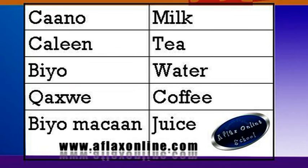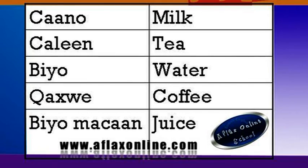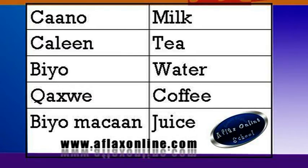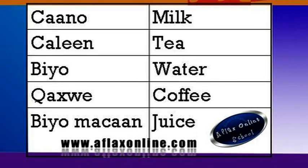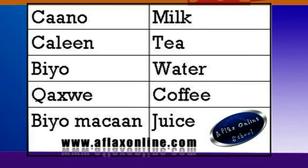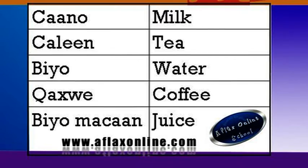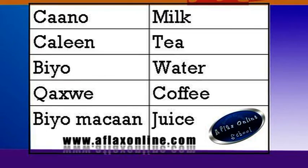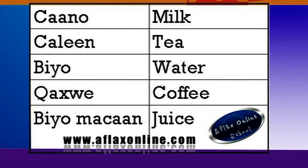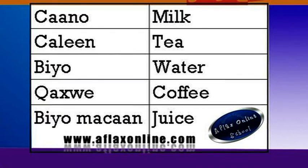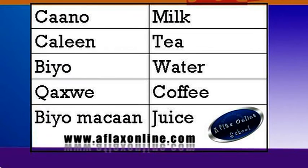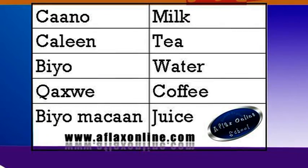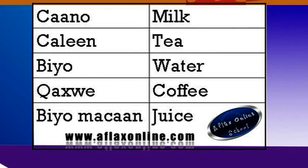If you go to a restaurant you can ask: 'si i cup shaah' — give me one cup of tea with milk. The next very important word is 'biyo' — water. In any case if you end up somewhere you can ask for water: 'biyo si i' — give me water. Sometimes people say 'biyo, biyo' which is more of a direct order meaning 'give me water.'